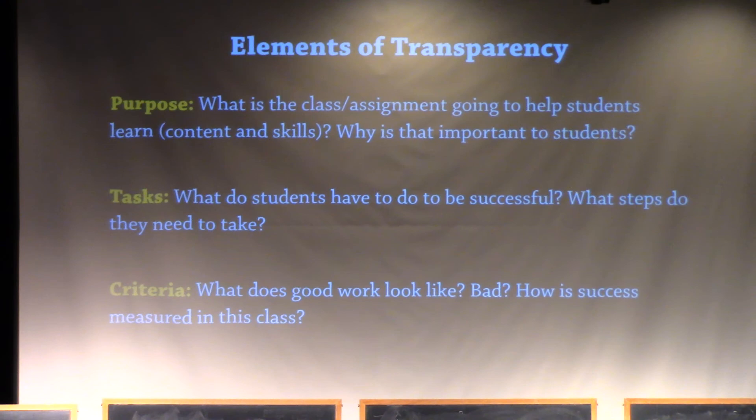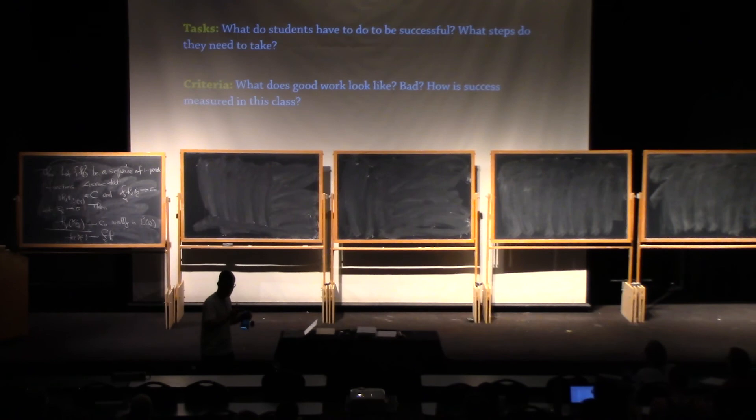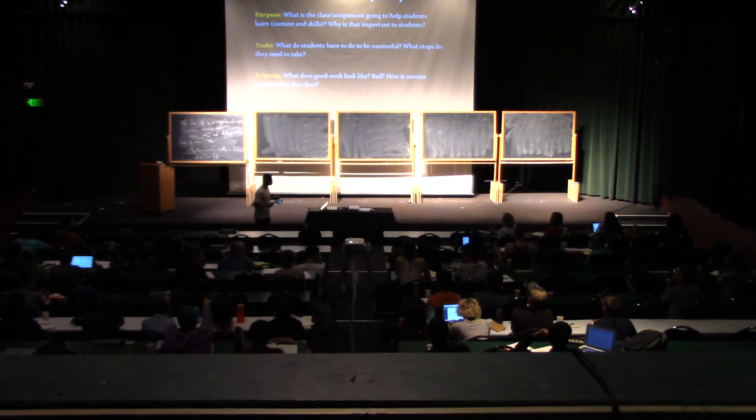Did anyone have any questions before I move on to the next topic? Can you give us an example of the difference between tasks and criteria? It seems like if you give them an example of your work — for example, bad work — that kind of tells them what they should be successful at, but I'm sure they overlap. That's a great question, Melissa. So for example, if I say to you, 'Write a...'